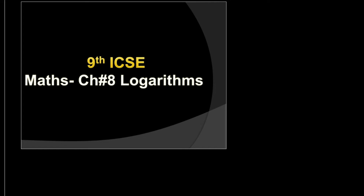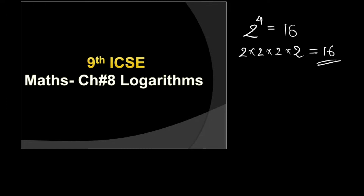The next chapter is logarithms — this is a new topic, so please pay attention. You've just done indices. In indices, 2 raised to 4 is equal to 16, which means 2 multiplied by itself 4 times gives you 16. But there is one more form used in mathematics to make long and complicated calculations easy, and that form is logarithms.